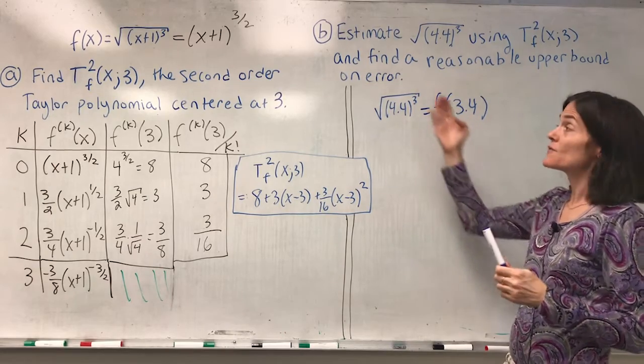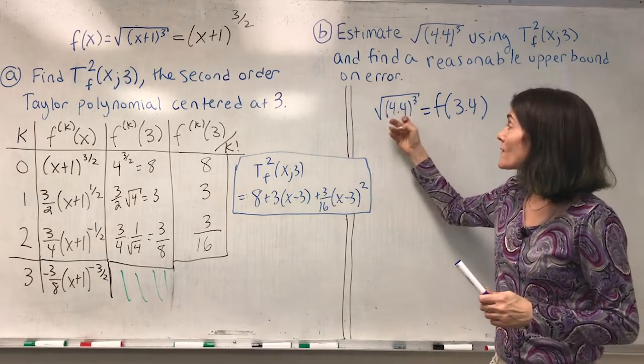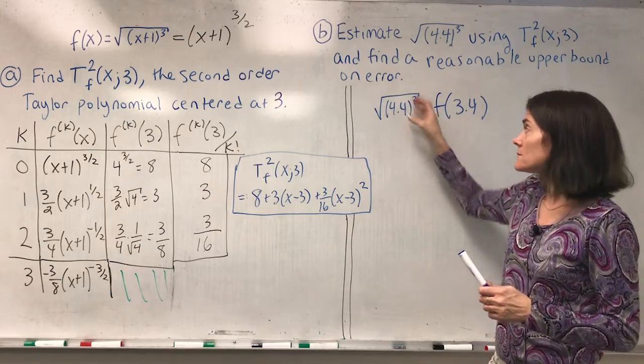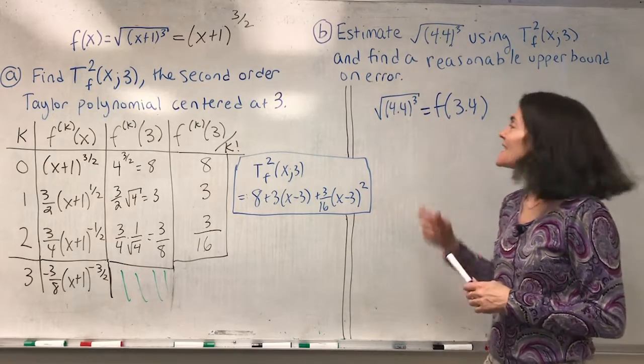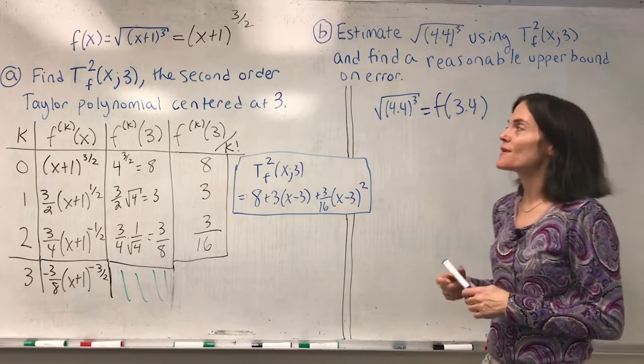Certainly, if you put 3.4 into your function, you get 4.4 to the three halves. So this number is f of 3.4.